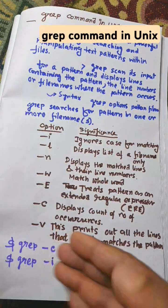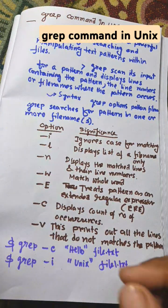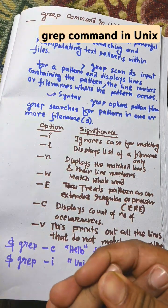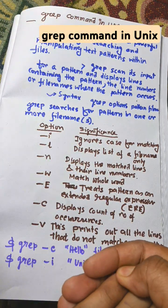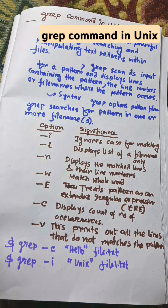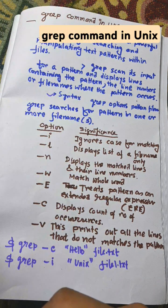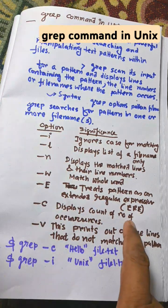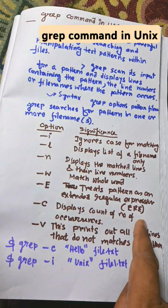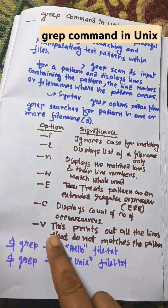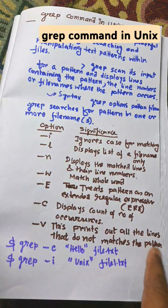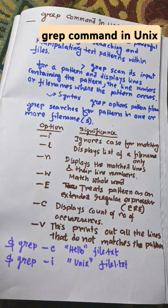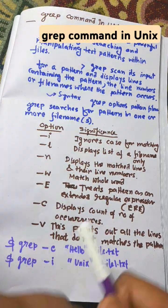We need to remember all the options: hyphen i ignores the case, hyphen l lists the filenames, hyphen n shows the matched lines and their numbers, hyphen w matches whole words, hyphen E matches regular expressions, hyphen c counts the number of occurrences - how many times the word is available in the system or file - and hyphen v prints only all the lines that do not match the pattern. So these are the concepts of GRIP command in Unix.